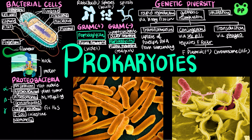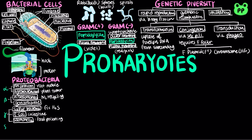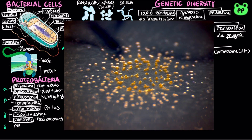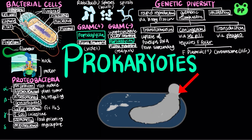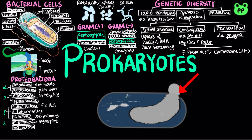Salmonella is responsible for some cases of food poisoning. Delta-proteobacteria include slime-secreting myxobacteria. When the soil dries out or food is scarce, the cells congregate into a fruiting body that releases resistant myxospores, which found new colonies in favorable environments. Bdellovibrio is another group of delta-proteobacteria, which attack other bacteria.